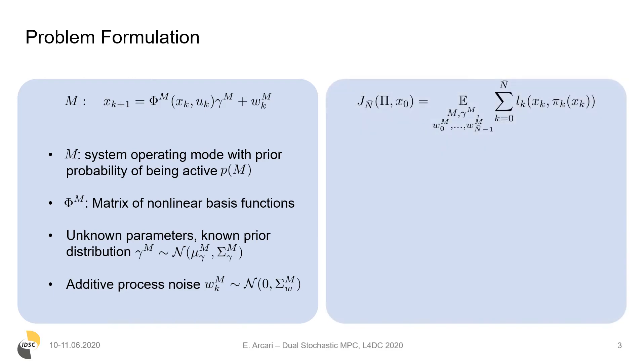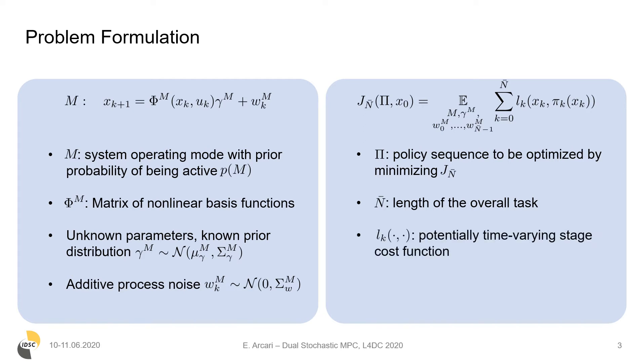The objective is to find a policy that simultaneously controls and identifies the system, enabling dual control. So we define the following finite horizon cost, where pi is a policy sequence we want to optimize, N-bar is the length of the task, and L-k is the stage cost function.